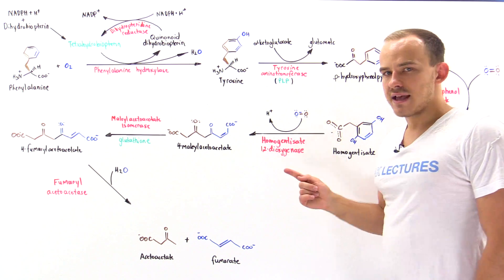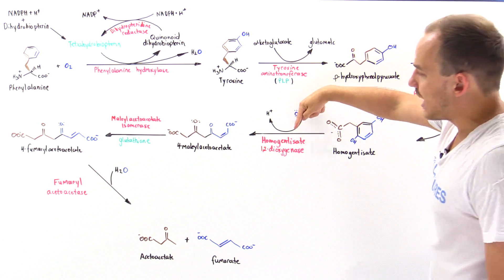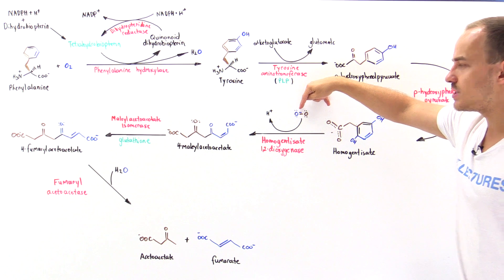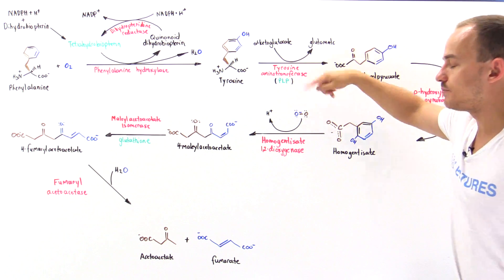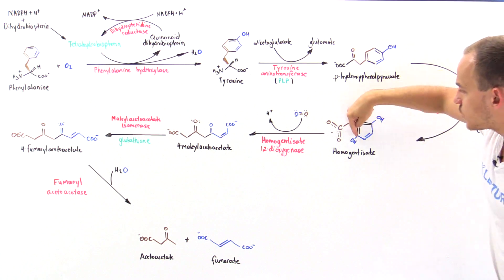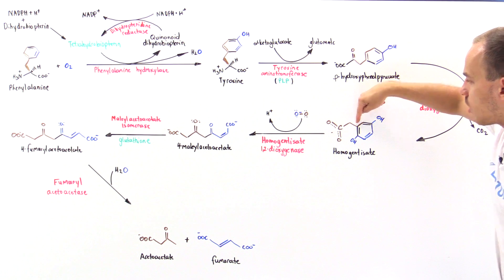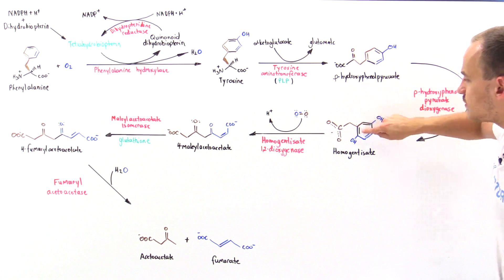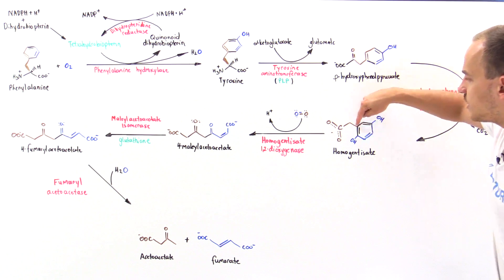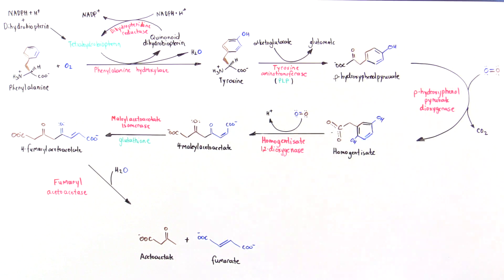In the next step, we again use a dioxygenase — homogentisate 1,2-dioxygenase — along with diatomic oxygen. One oxygen atom is attached onto one carbon and the other oxygen onto an adjacent carbon, breaking the sigma and pi bonds within the aromatic ring to form the intermediate 4-maleylacetoacetate.